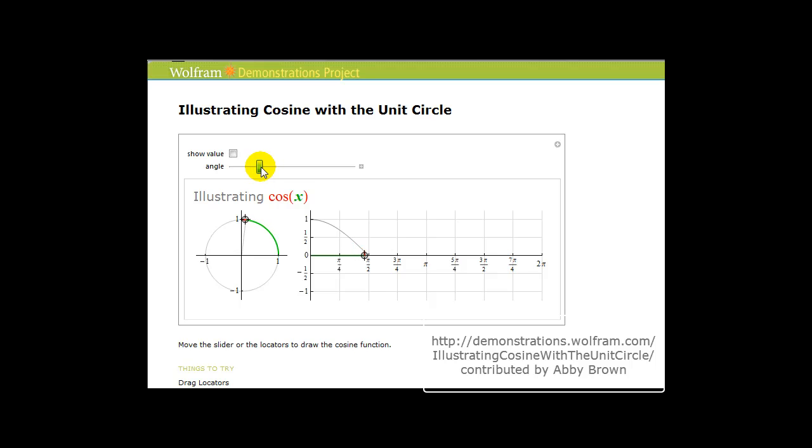So at 90 degrees, this would be the point zero, one. And since the x-coordinate is zero, the cosine of 90 degrees is equal to zero. Or the cosine of pi over two radians is equal to zero.